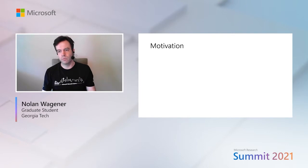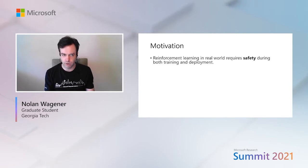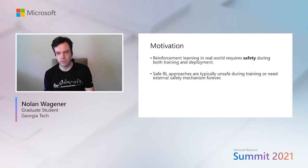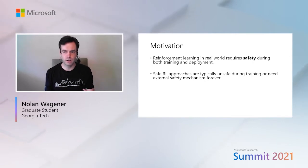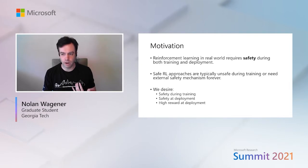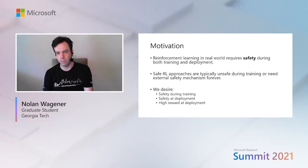In order for reinforcement learning to be applied to real-world problems like robotics, we must make sure the RL agent is safe both during and after training. Typical safe RL approaches, however, make a trade-off — they either don't ensure safety during training, or require an external safety mechanism to be present at all times, even after training. Our work, on the other hand, seeks to satisfy three requisites: the agent must be safe during training, learn to be safe for deployment, and achieve high rewards at deployment.